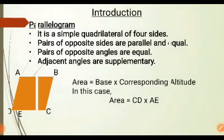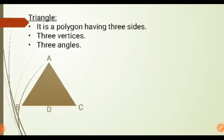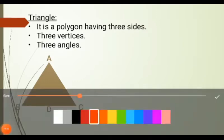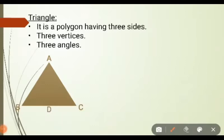Next we have the triangle. What is a triangle? It is a simple polygon having three sides. It has three vertices and three angles. The three sides are AB, BC, and CA. The three vertices are A, B, and C, and the three angles are angle A, angle B, and angle C.